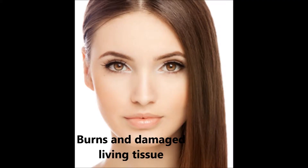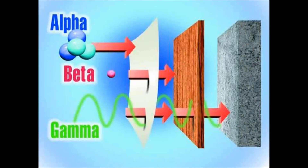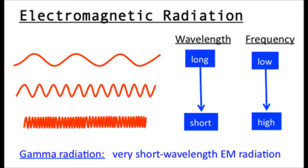Gamma radiation contains electromagnetic waves which are of much higher frequency and aren't made up of particles. As gamma radiation has a stronger penetrating power, it can only be stopped by a thick film of concrete or lead.